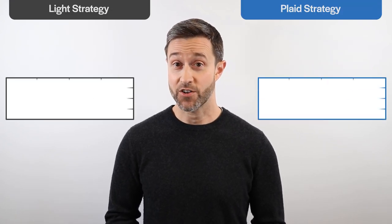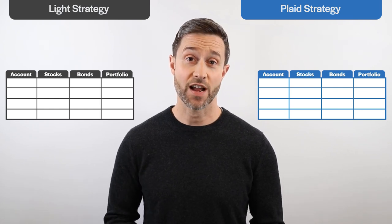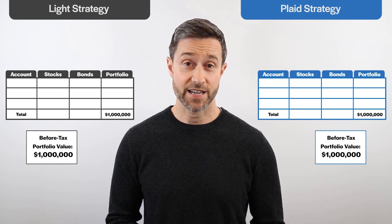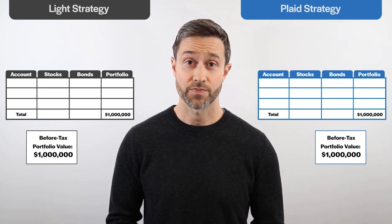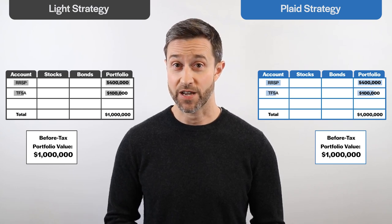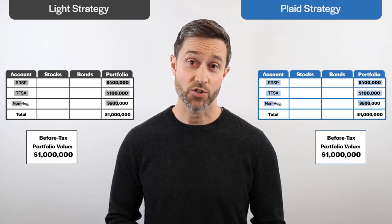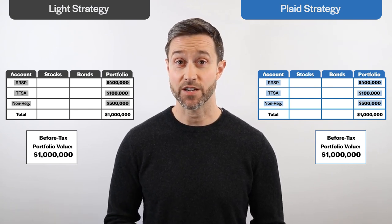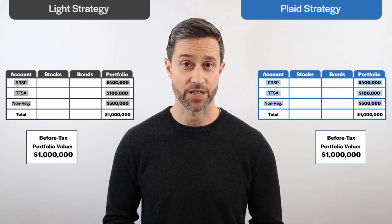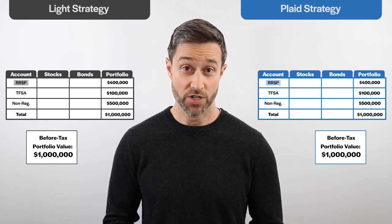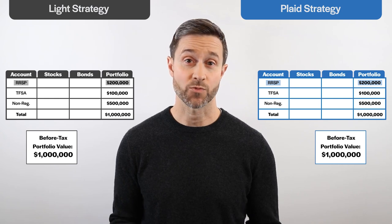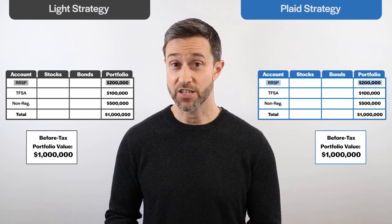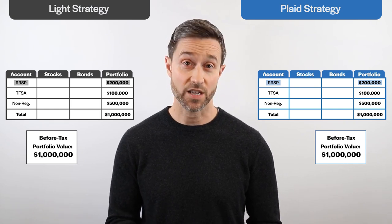The first step to planning out your plaid approach is to determine your after-tax total portfolio value. For this example, we'll use the same before-tax account values from our last video: a $400,000 RRSP, a $100,000 TFSA, and a $500,000 non-registered account. We'll also assume the same 50% average tax rate on the RRSP withdrawals in retirement. Based on this, our RRSP is worth $200,000 after-tax, or 50% of the $400,000 before-tax RRSP value, making the total after-tax portfolio value $800,000.